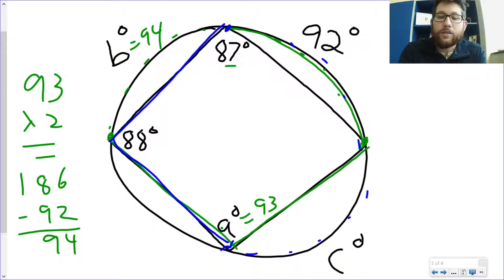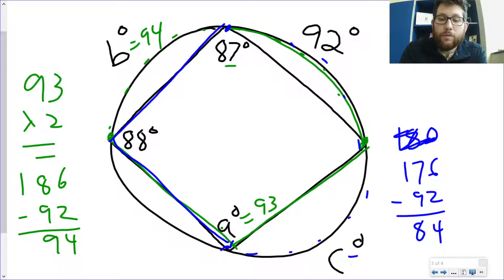So 88 times 2, it's not 180. 88 times 2 would be 176 minus 92, and so 17 minus 9, because that's going to be 4. 17 minus 9 is 84, would be c.